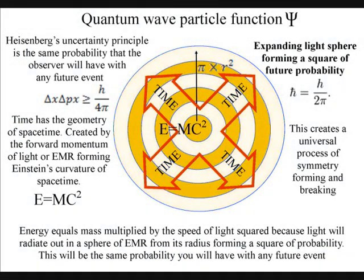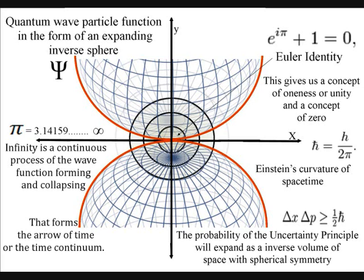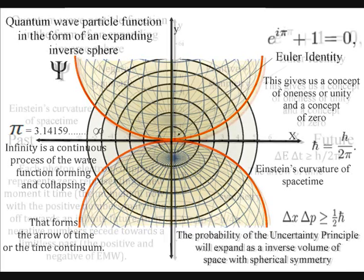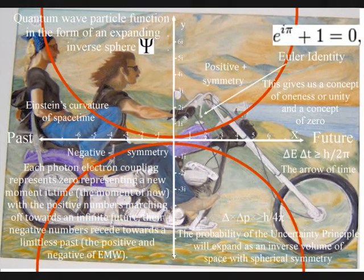I hope to base this theory on pure mathematics and therefore pure physics. I believe this can be done in just three dimensions and one variable, time. Each photon-electron coupling represents zero, representing a new moment in time, the moment of now, with the positive numbers marching off towards an infinite future and the negative numbers receding towards the limitless past, the positive and negative of electromagnetic waves.